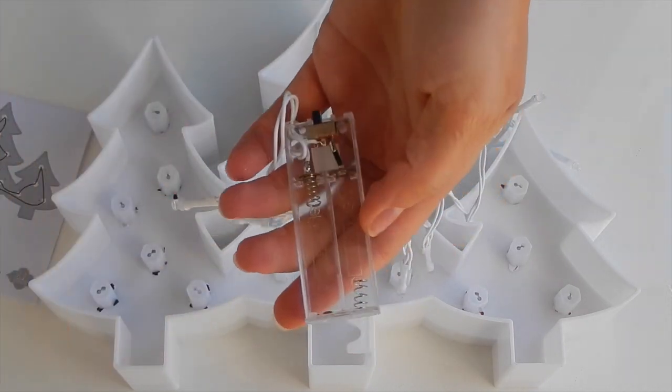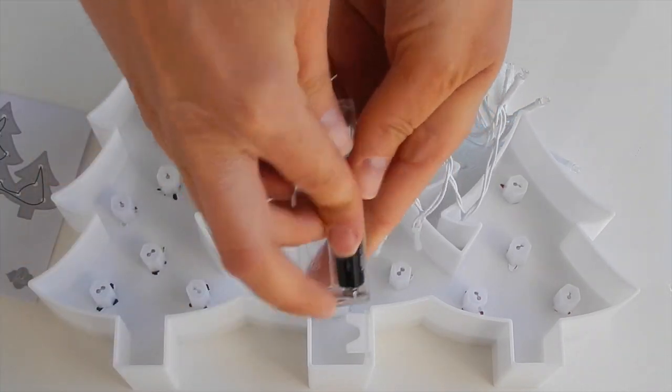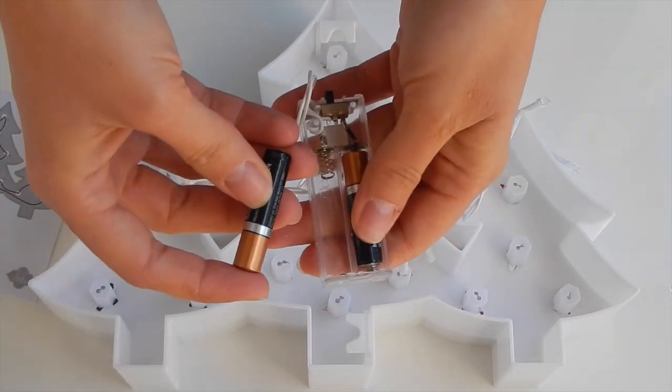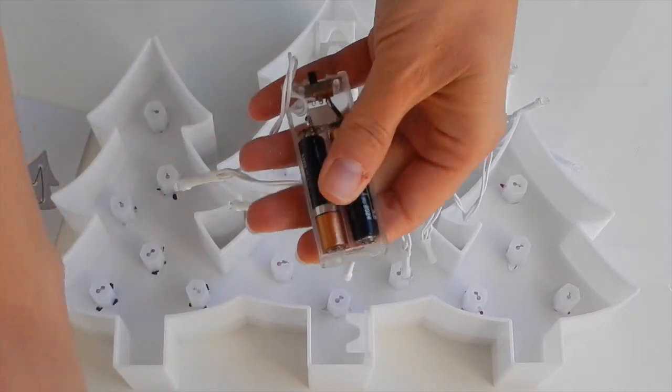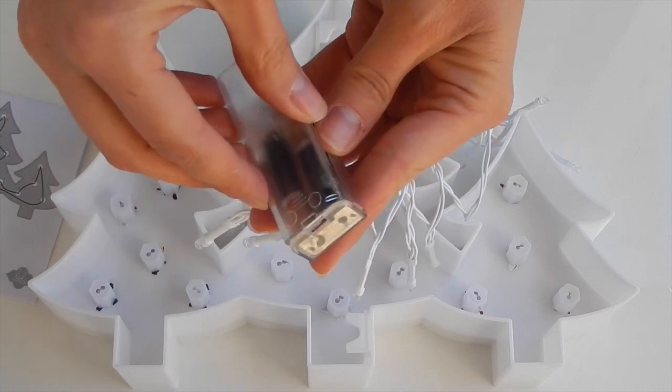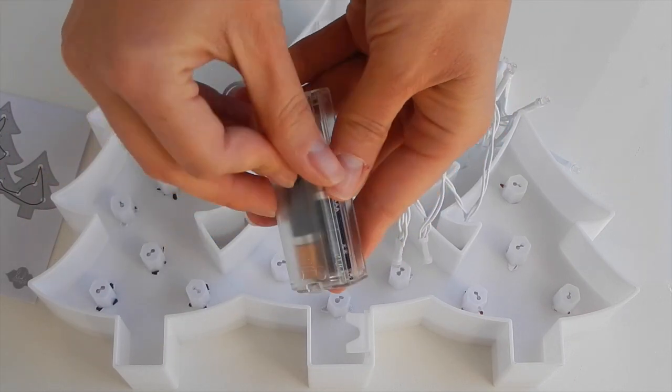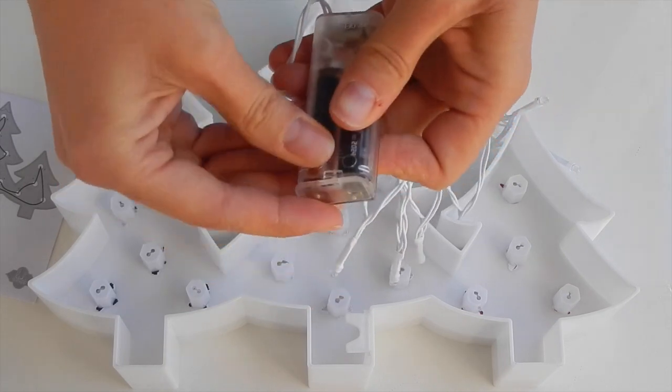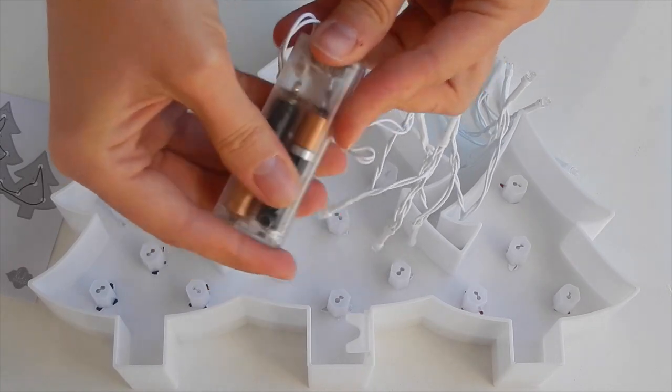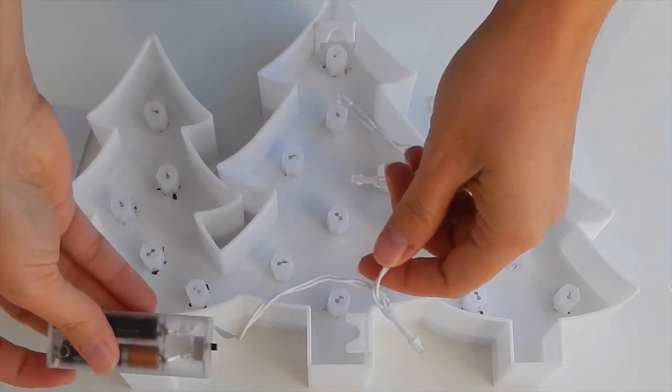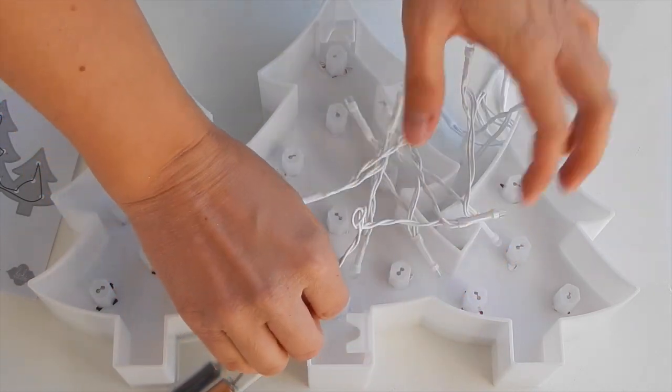What I like to do is pop my batteries in first and make sure they're working. You just put them in the correct way and snap on your back piece. Sometimes this takes a little extra time; mine likes to stick on me. Once it's snapped into place, then we can start poking through the lights.